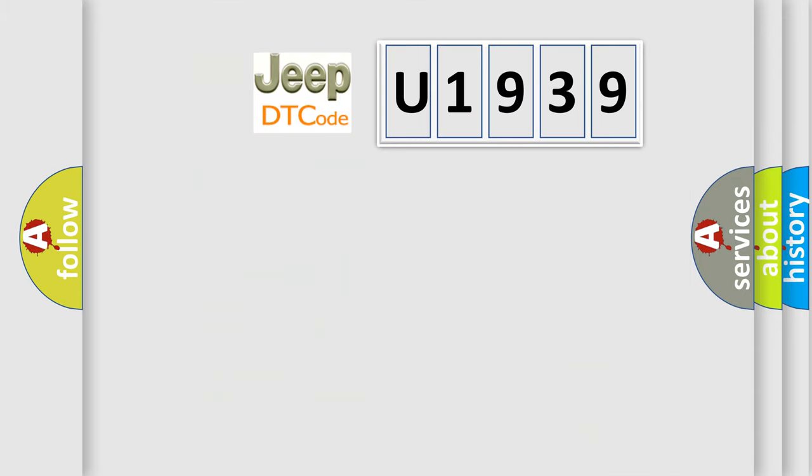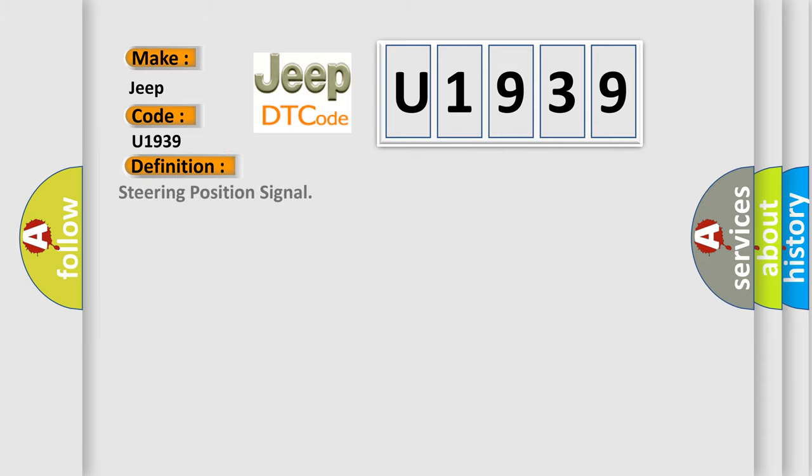So, what does the diagnostic trouble code U1939 interpret specifically for Jeep car manufacturers? The basic definition is steering position signal. And now this is a short description of this DTC code.